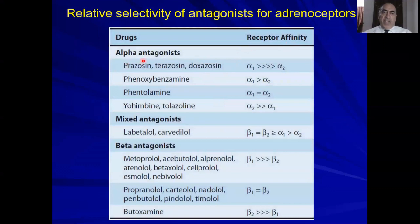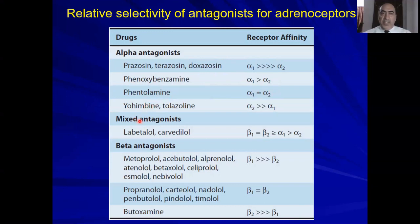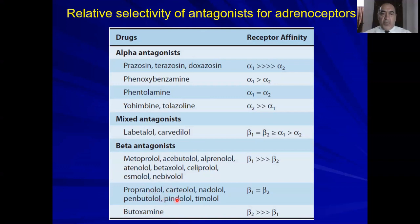Reviewing receptor affinities: the three major classes of receptor blockers are alpha blockers — selective ones such as prazosin, terazosin, doxazosin; non-selective ones such as phenoxybenzamine and phentolamine; and alpha-2 blockers such as yohimbine. Labetalol is a mixed antagonist inhibiting both alpha-1 and beta receptors. Beta antagonists include selective ones such as metoprolol, acebutolol, atenolol, and non-selective ones such as propranolol, timolol, pindolol. Butoxamine is a selective beta-2 blocker not in clinical use.